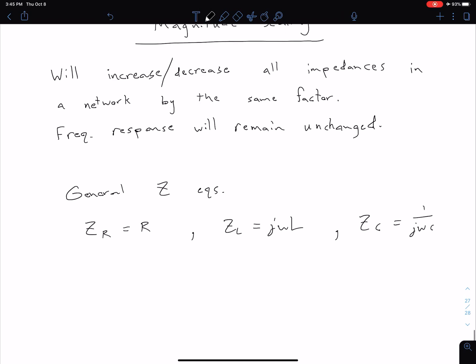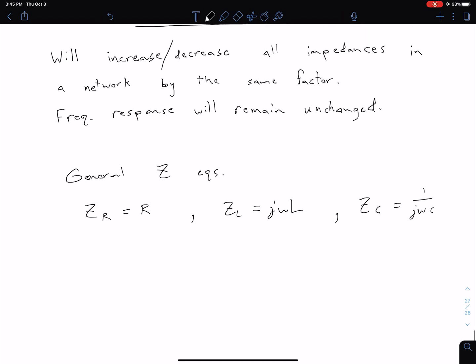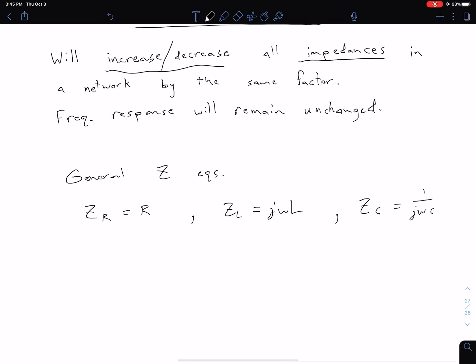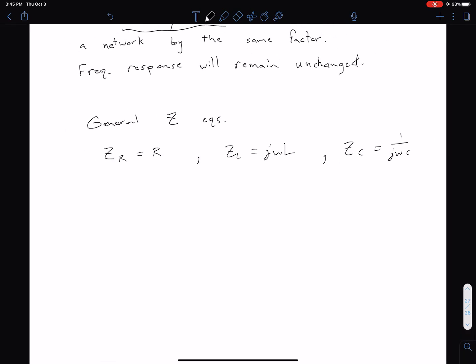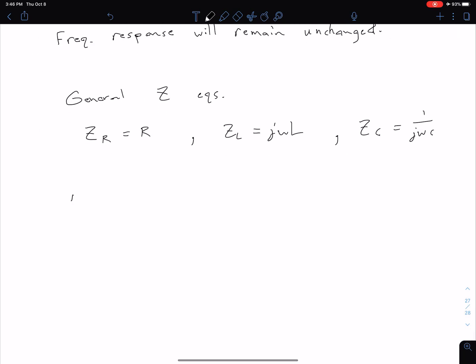We want to multiply each of these impedances by some factor to increase or decrease the impedance. This factor isn't limited to being greater than 1. We'll call this factor Km. We're going to multiply each impedance by the Km factor. Keep in mind, we don't want any change to frequency.